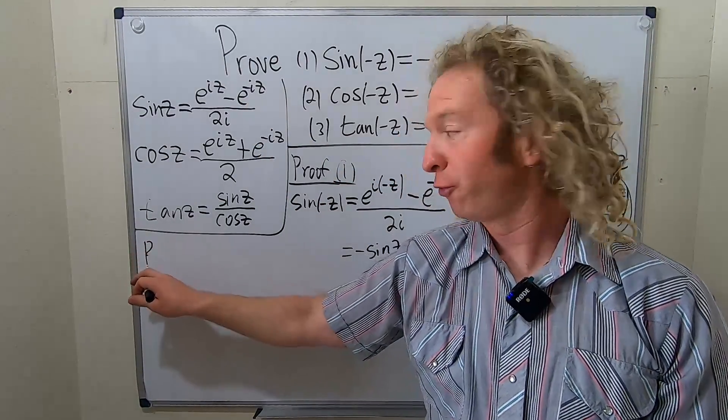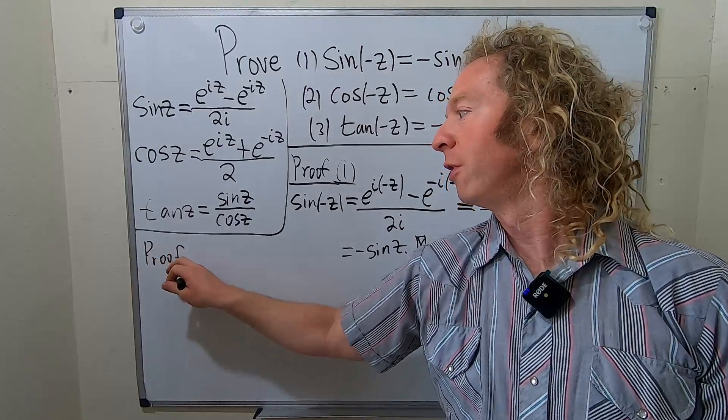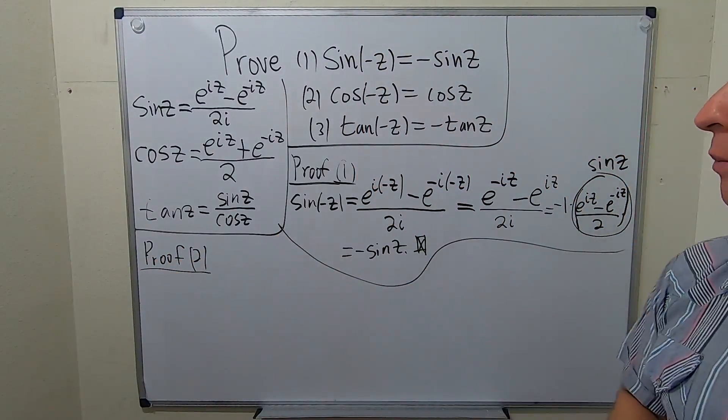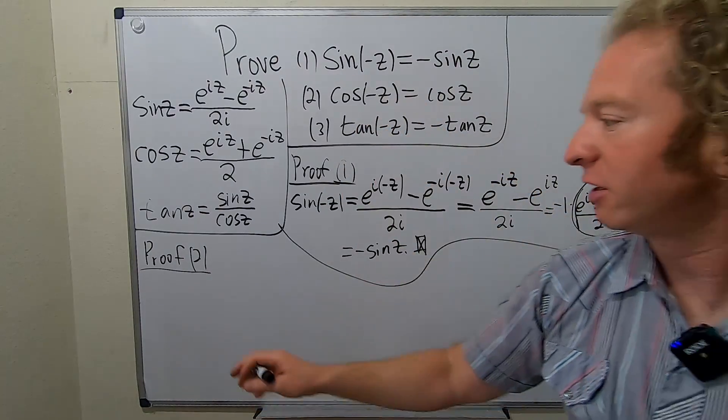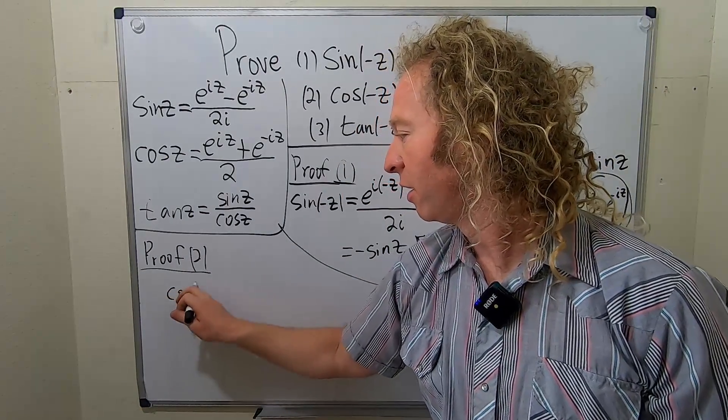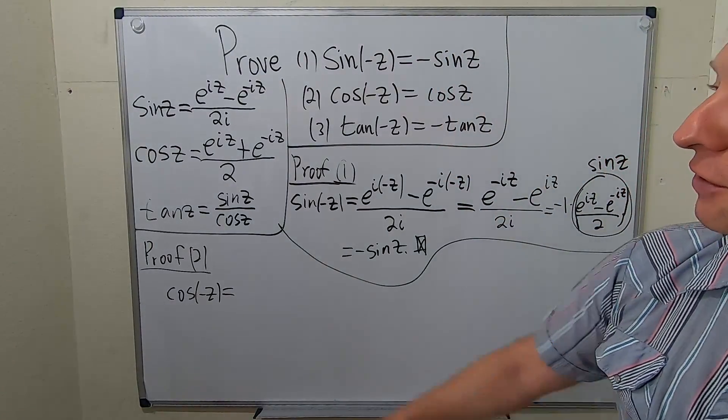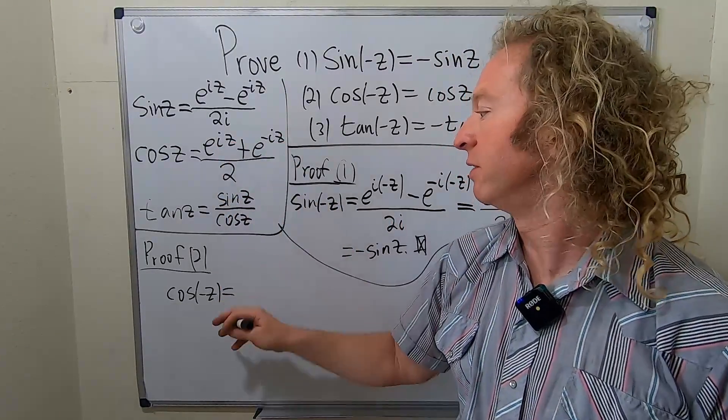Let's do the second one. Proof of two. We'll start the same way. We'll plug in negative z for cosine. So cosine of negative z. As before, we just go to the definition of cosine and replace z with negative z.